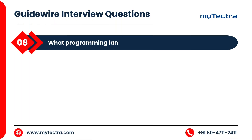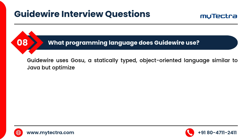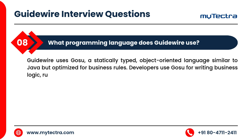What programming language does Guidewire use? Guidewire uses GOSU, a statically typed, object-oriented language similar to Java but optimized for business rules. Developers use GOSU for writing business logic, rules, and workflows in Guidewire applications.